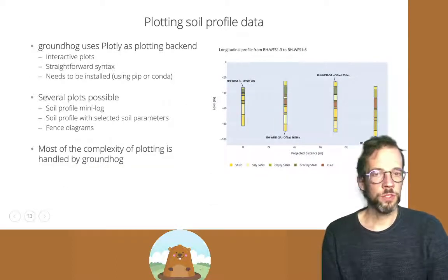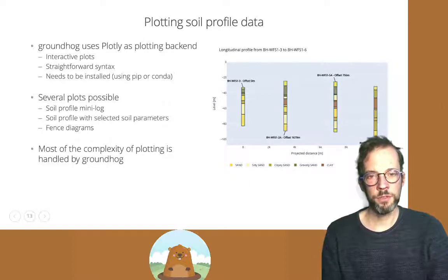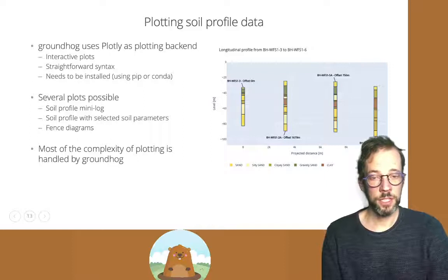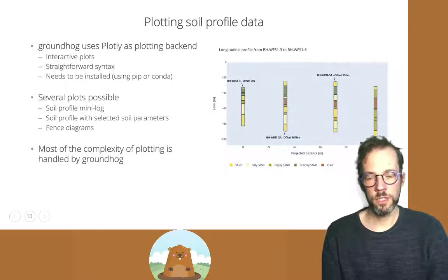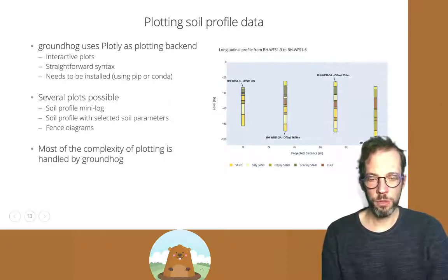For graphical representations, Groundhog uses Plotly as the plotting backend. The advantage of Plotly is that plots are interactive. The syntax is not complex, but the Plotly package needs to be installed separately — it's not included in Anaconda by default. Simply run conda install plotly or pip install plotly to get it onto your system.